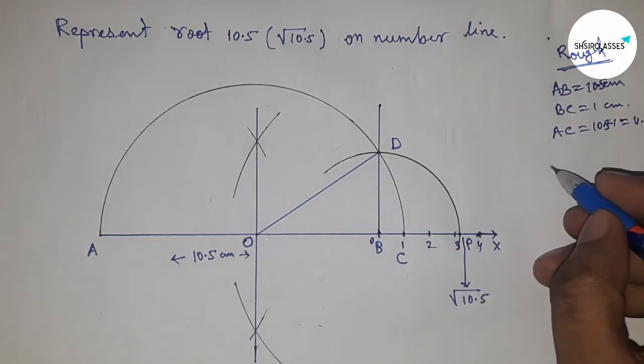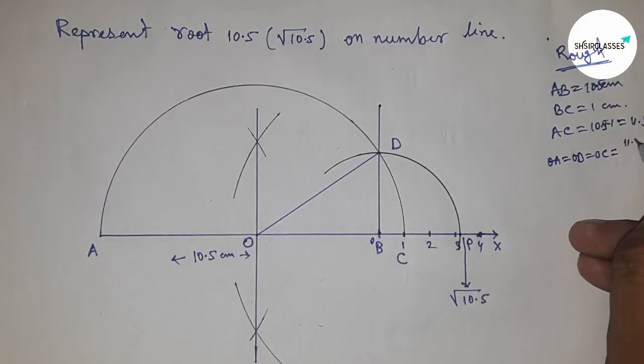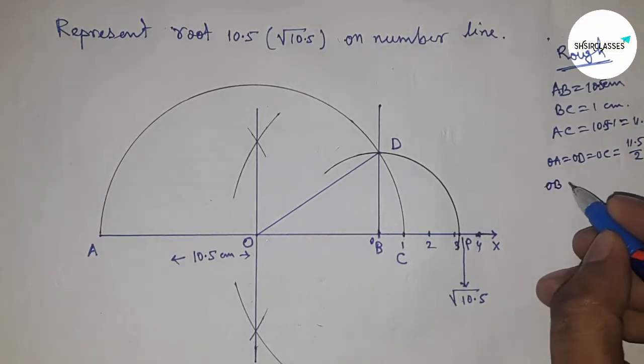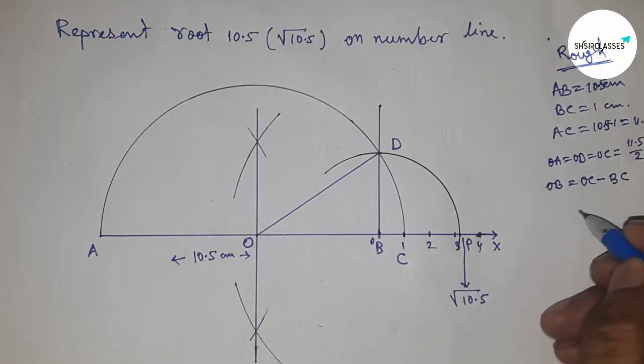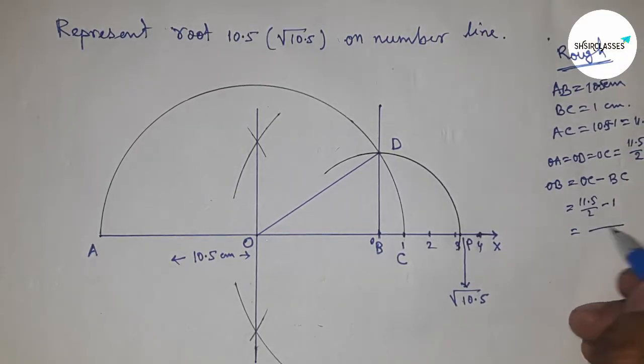This is 11.5. The radius OA, OD, and OC equal 11.5 by 2 centimeters. Now OB equals OC minus BC. Putting the value of OC equals 11.5 by 2 minus 1, so after calculating this is 9.5 by 2 centimeters.